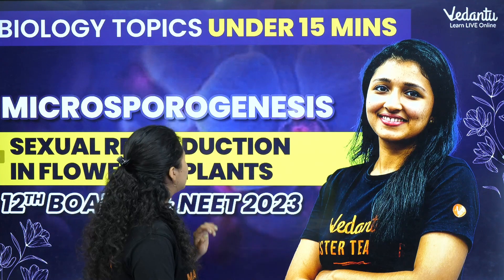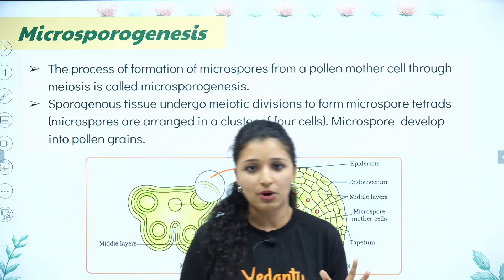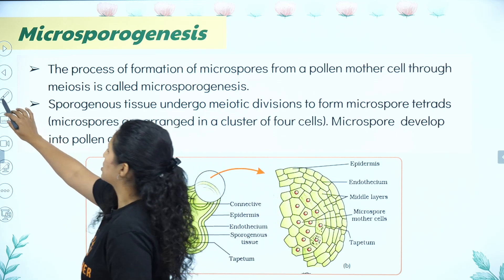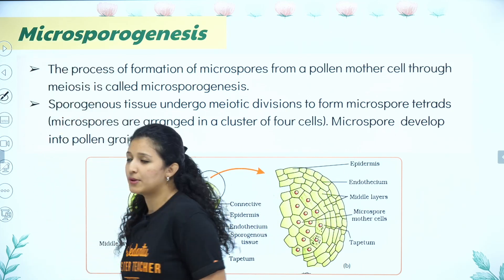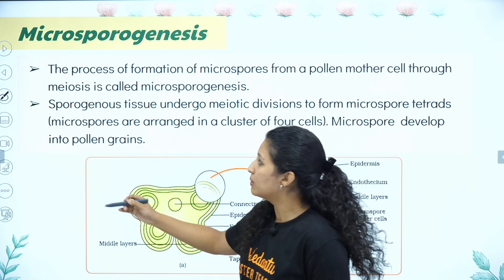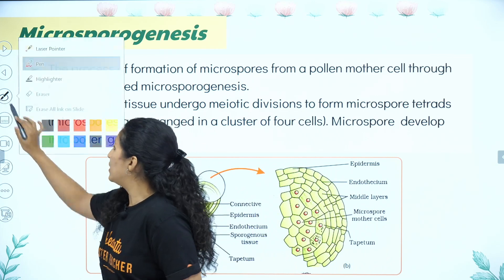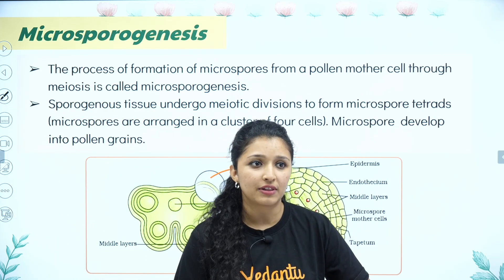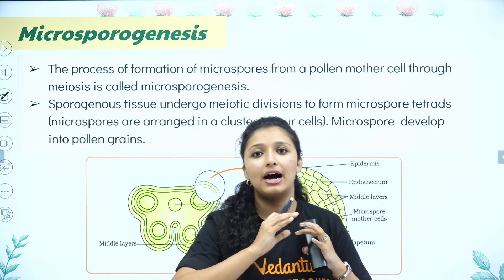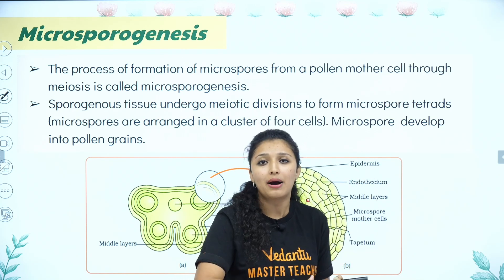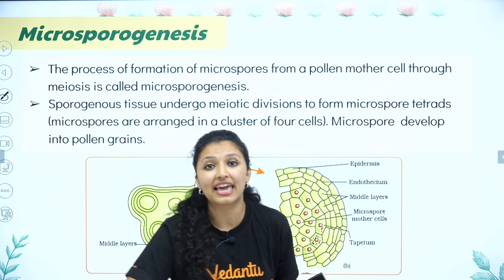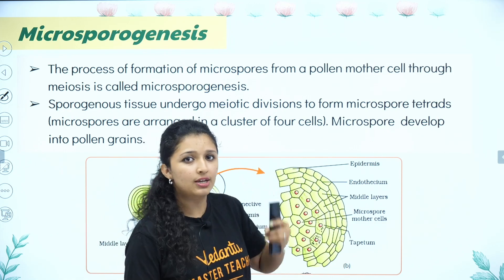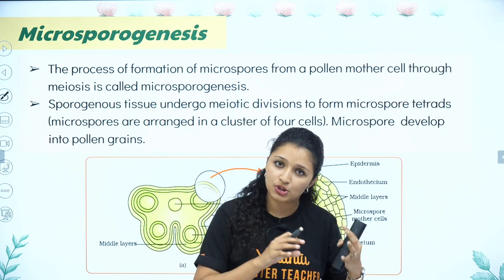First we will go with the definition. What is this process? The process of formation of microspores. From plant kingdom in Class 11, we know that microspore formation gives a haploid structure. If haploid, you can form the gametophyte. So the sporophytic plant is attached to the gametophyte form.